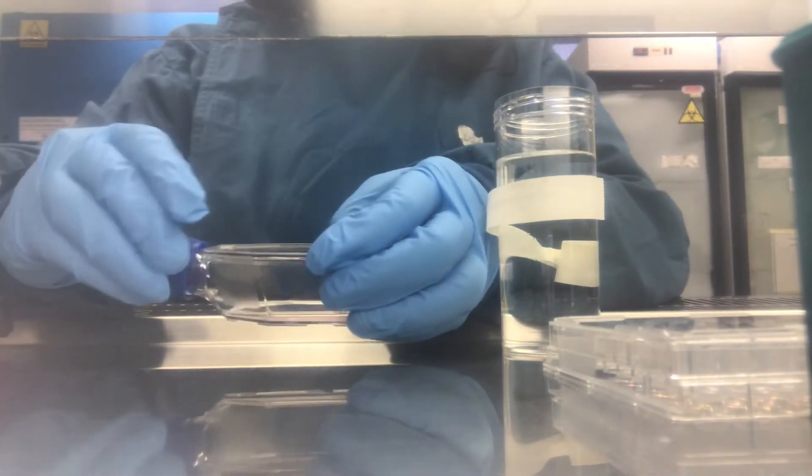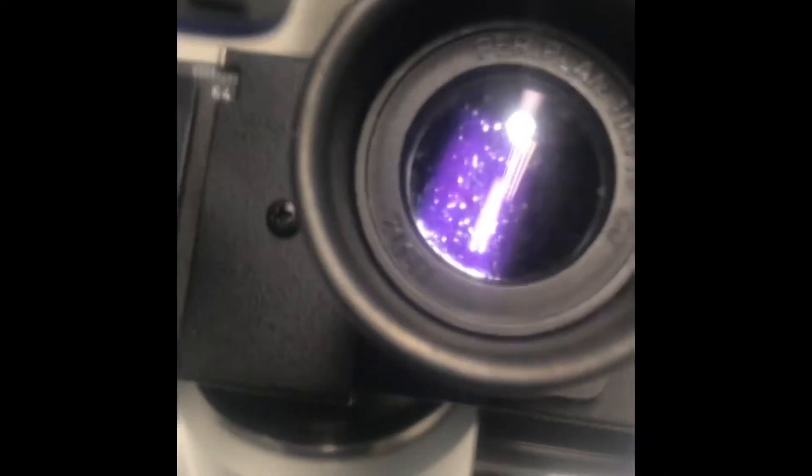Now we're gonna incubate at 37 degrees centigrade and five percent carbon dioxide incubator for around one minute. These incubation times differ according to your cells. I'm trying to view on the microscope but I cannot get the focus.